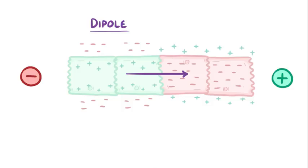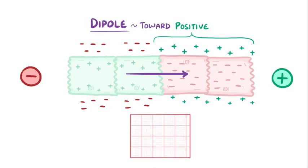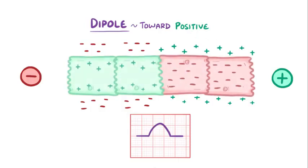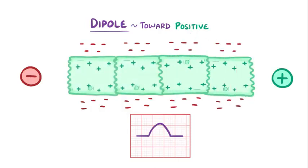Remember the electrodes detect charge on the outside of the cell. So this points toward where the positive charge is outside the cell. Now if there's a dipole vector pointing toward the positive electrode, then the ECG tracing shows it as a positive deflection. The bigger the dipole, the bigger the deflection. If we unpause this, then everything becomes depolarized, and since there's no difference in charge now, there's no dipole, and so there's no deflection.